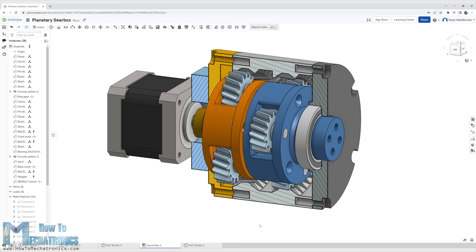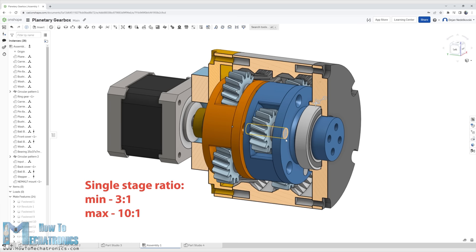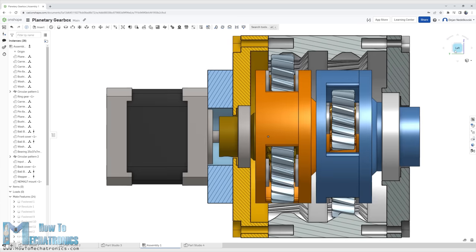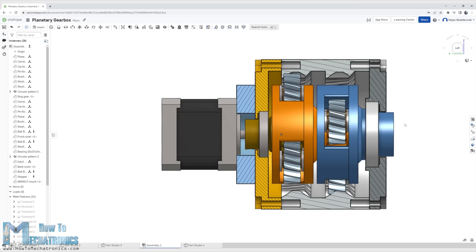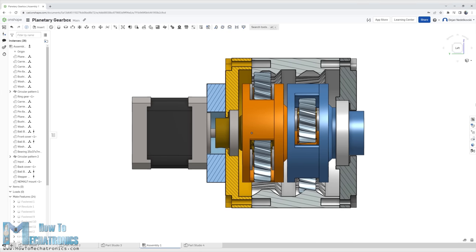That's so because a single-stage planetary gearbox can typically provide ratios as low as 3 to 1 or as high as 10 to 1. In this way, with multiple stages, we can achieve very high reduction ratios with planetary gearboxes. So in order to get something around 15 to 1, we need two stages.